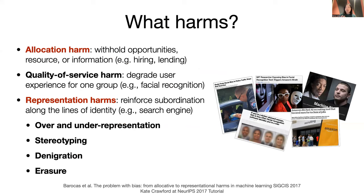Let's start with harms — the human consequences from biases. The research literature commonly differentiates two high-level categories. One is allocation harm, where a biased system may withhold opportunities, resources, or information for certain groups — considering use cases such as automated systems for hiring or lending. The other is representation harm, which reinforces subordination along the lines of identity, whether it is under-representation, stereotyping, or erasing a certain group. This commonly appears in systems like search engines.